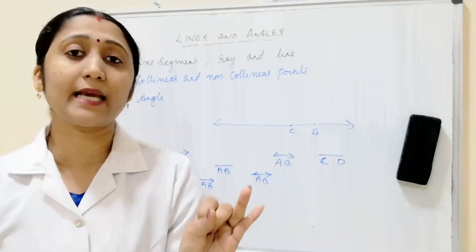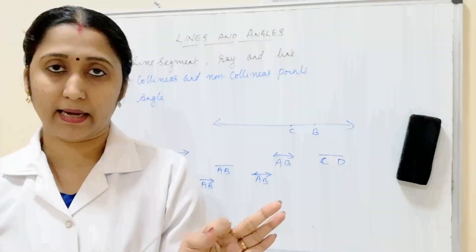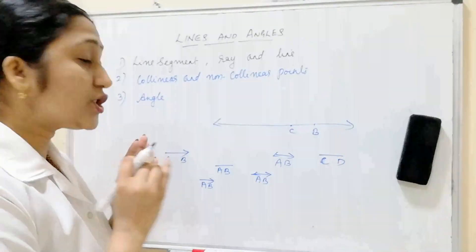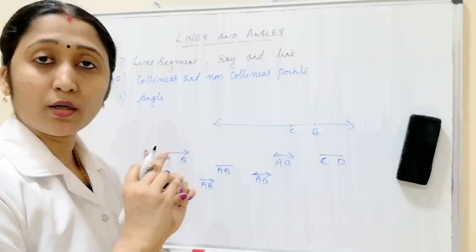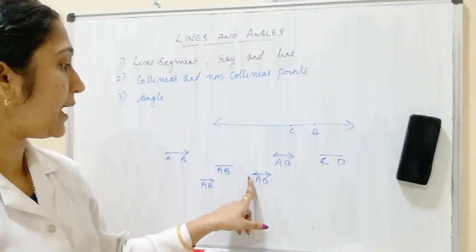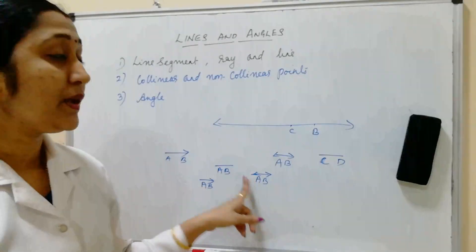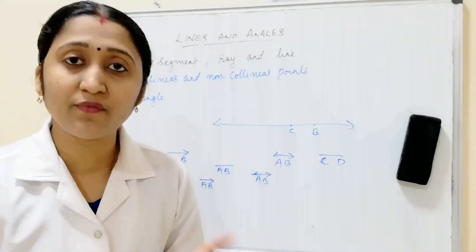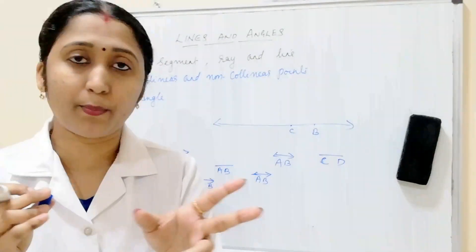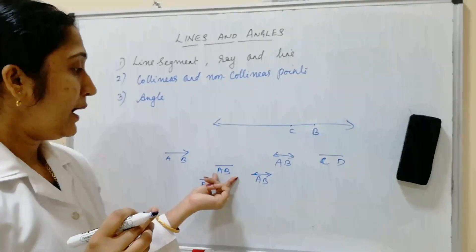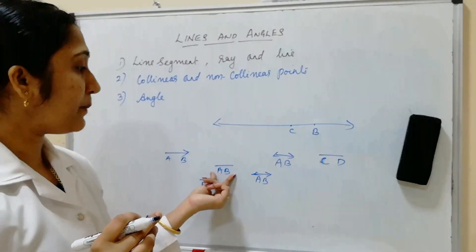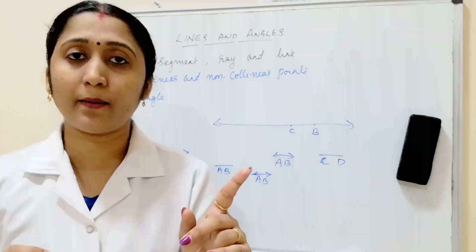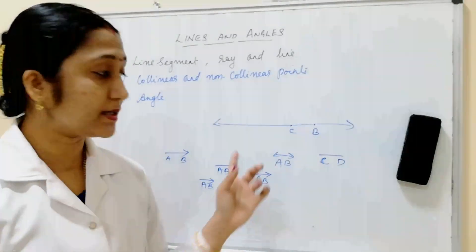To summarize: a line has no end points on either side. A line segment is a part of a line with two end points, denoted as line segment AB. And a ray has only one end point, denoted as ray AB. These are the three terms.